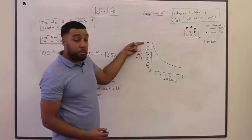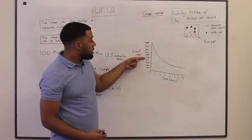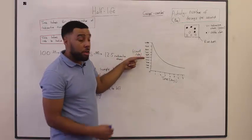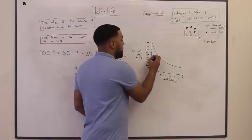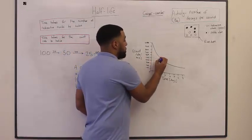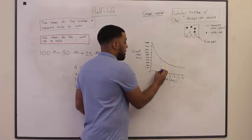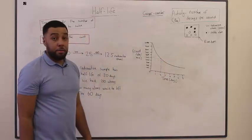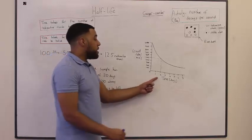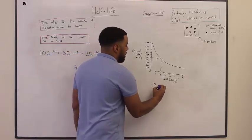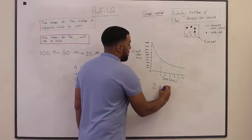So, how long did it take to drop from a thousand to five hundred? And all you guys have to do is read across the graph. So, this sample had a half-life of two days.